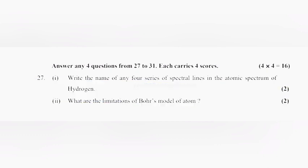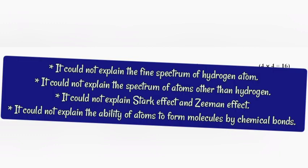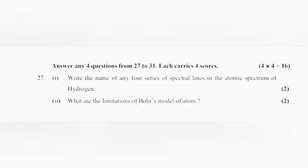Part 2: What are the limitations of Bohr's model of atom? Answer: It could not explain the fine spectrum of hydrogen atom. It could not explain the spectrum of atoms other than hydrogen. It could not explain Stark effect and Zeeman effect. It could not explain the ability of atoms to form molecules by chemical bonds. Write any two.